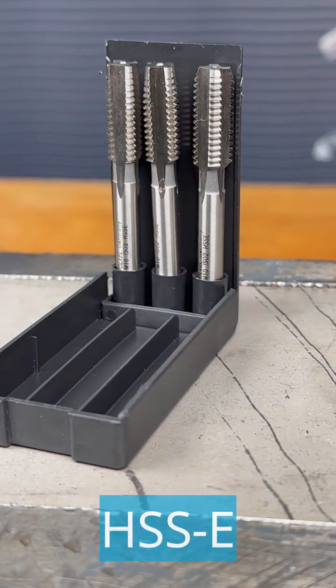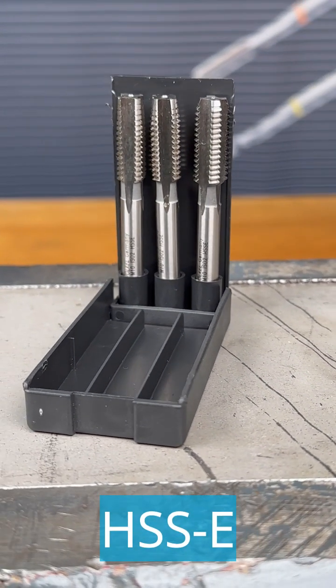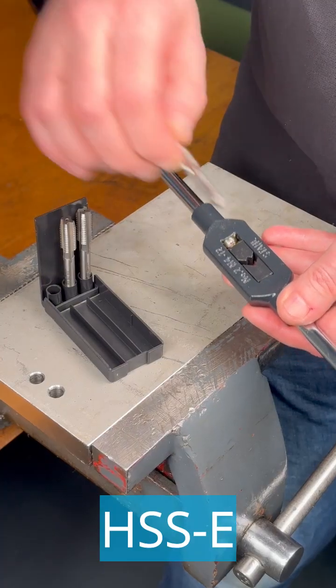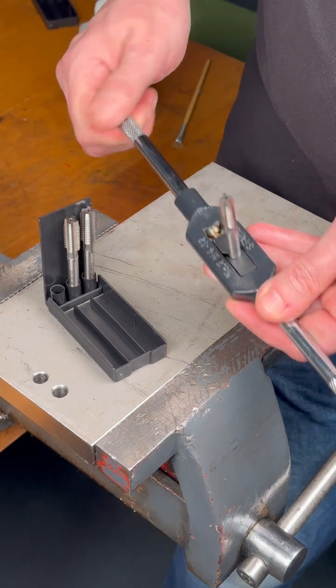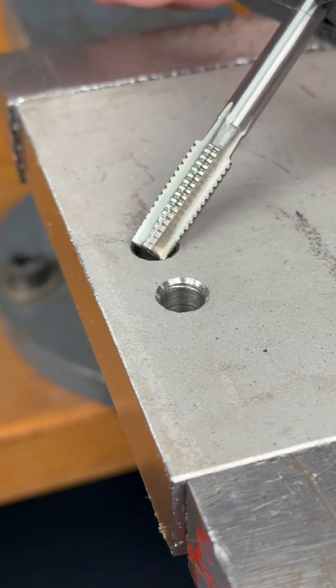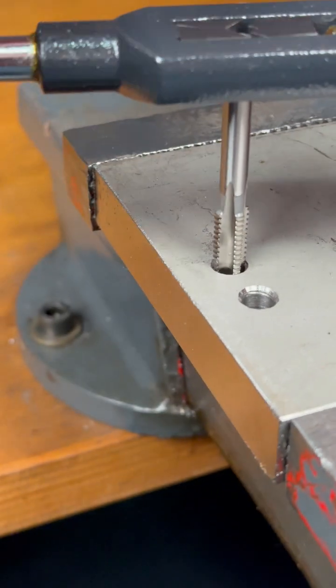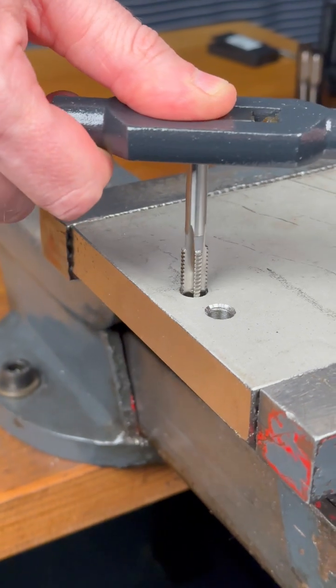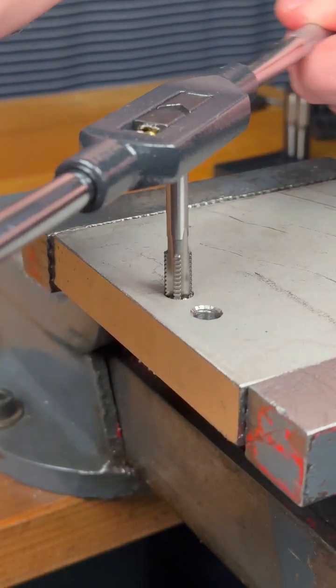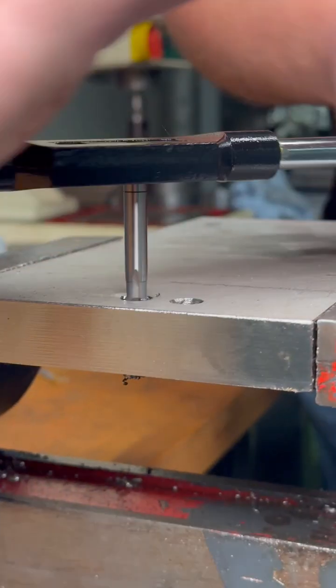When things get more complicated, our HSSE hand taps are recommended for steels that are difficult to machine, such as stainless steels or heat-treated steels. Thanks to a cobalt component of 5% in the tool material, these taps are more cutting-stable than taps made from HSSG and are particularly suitable for challenging applications where conventional taps reach their limits.